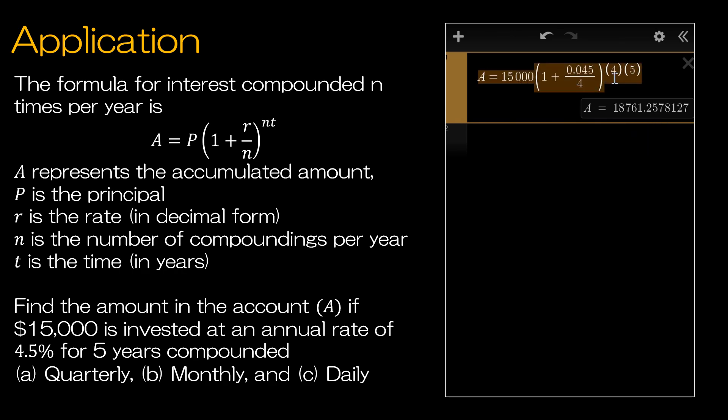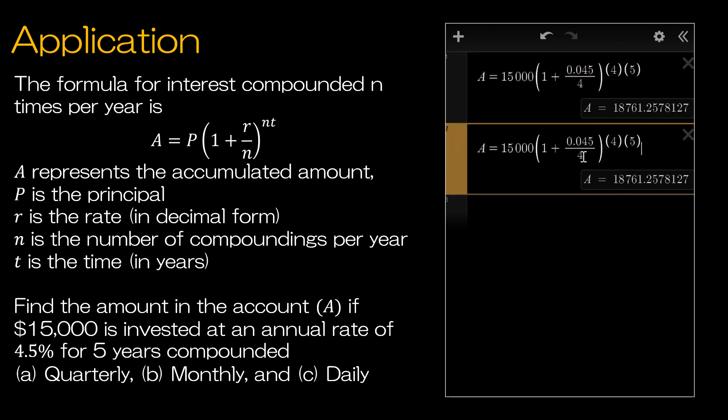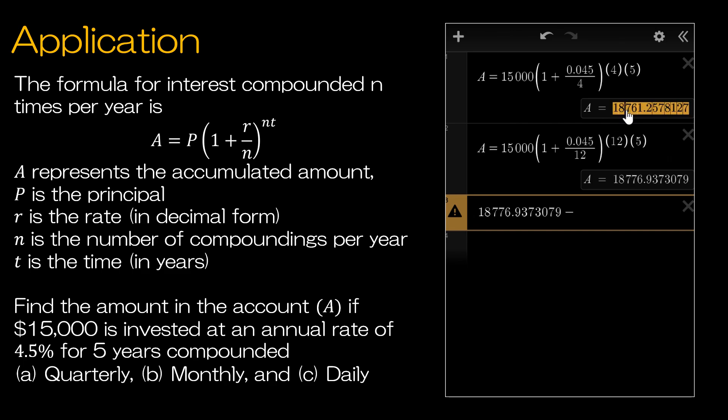I feel pretty good about that. What if instead I did this monthly? So now instead of every three months that money's put back into my account to earn more interest, now it's every one month or 12 times per year. And I can see that I have in fact earned more money. So I have this amount minus this amount. I've made an extra $15.68.